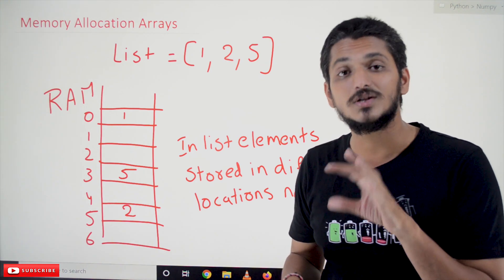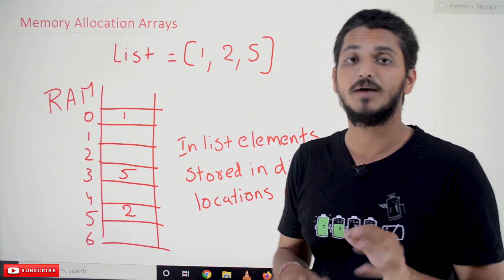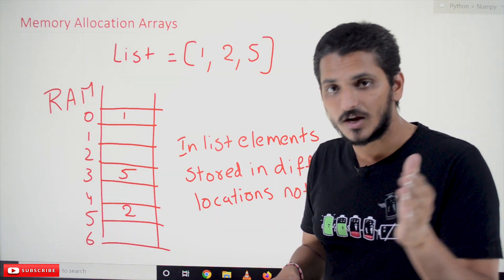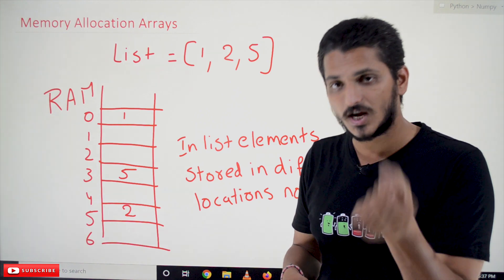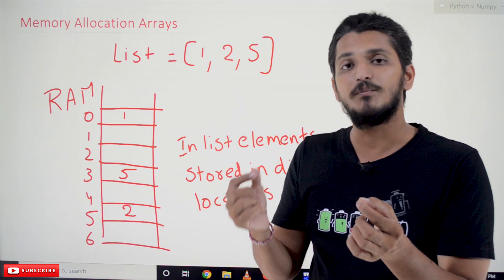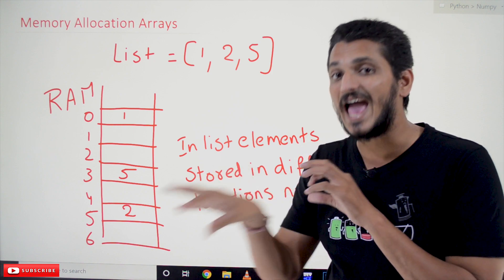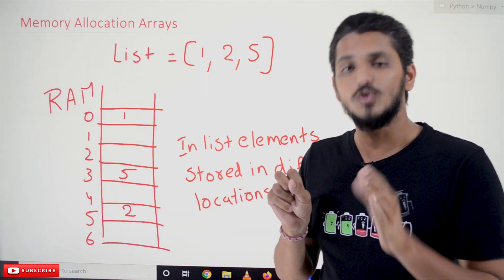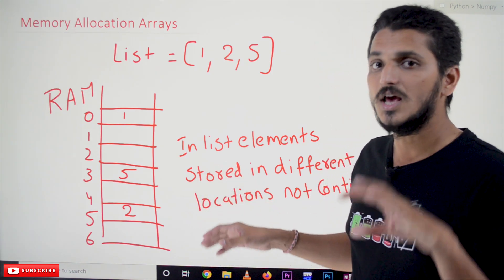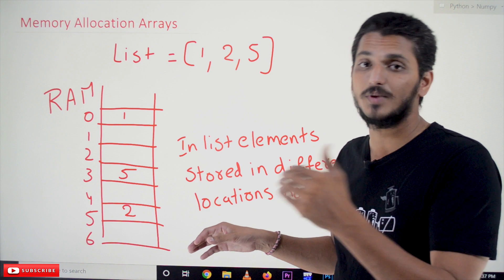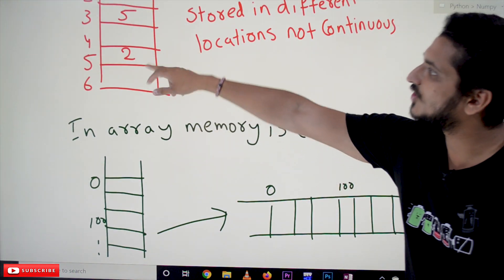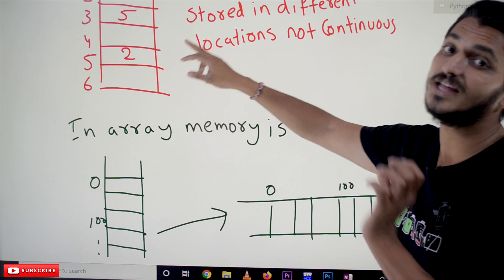But this is not the situation with NumPy arrays. NumPy arrays use continuous memory allocation — elements are stored in continuous order. If you know the starting address, you can go to anywhere. That's the advantage of NumPy arrays: we can easily access the elements. The key point is continuous memory allocation. In a list, memory is not continuous and we maintain references instead.